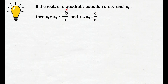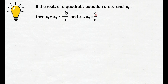So, the quadratic equation has roots denoted as x sub 1 and x sub 2 — these are the two roots of the given quadratic equation. When we add the two roots, that is equal to negative b over a. And when we multiply them, that is equal to c over a. Here, a, b, and c are the coefficients of the quadratic equation. So, we just get the values of coefficients a, b, c, then substitute them into the given formula, and we can get the sum and product of the roots.